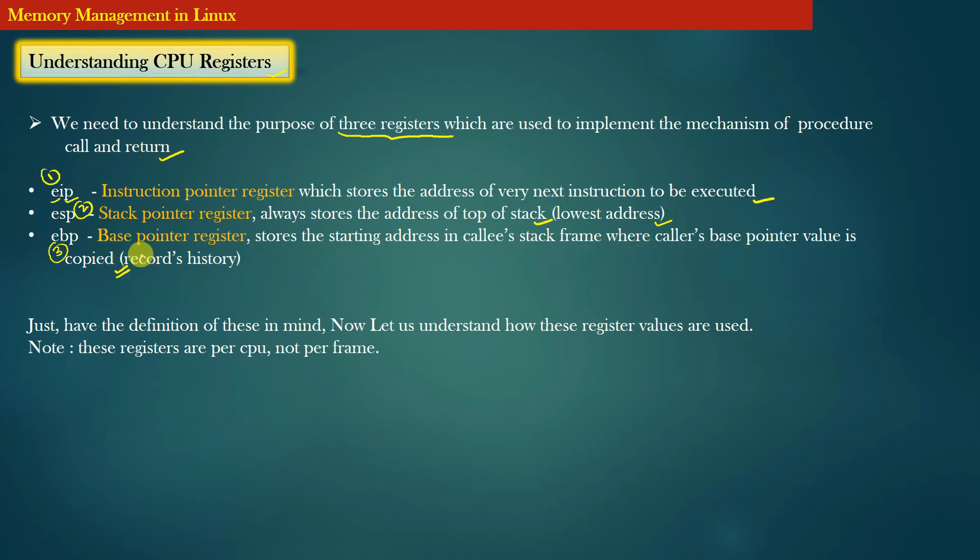Base pointer register is used to store the history. I'm sure you have not yet understood base pointer register, so next we will understand the usage of all these three registers with the help of an example. Just have the definition of these three registers in mind. We will apply these definitions in the next example that we are going to discuss.